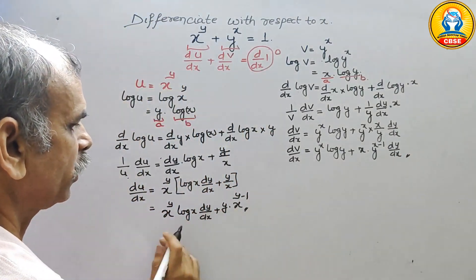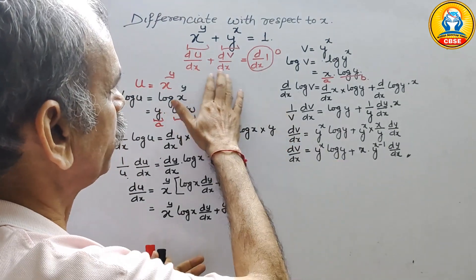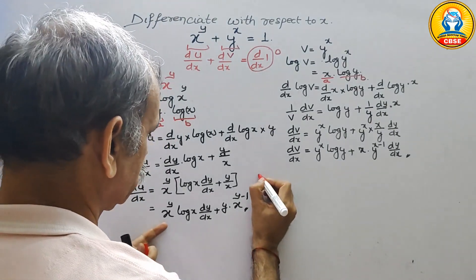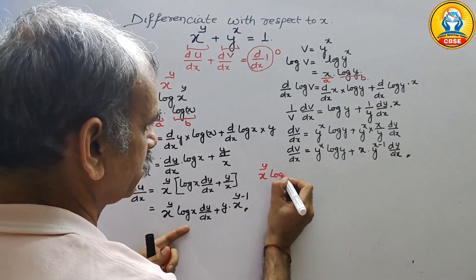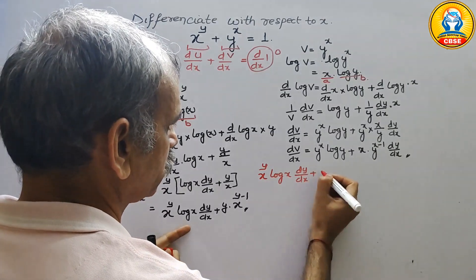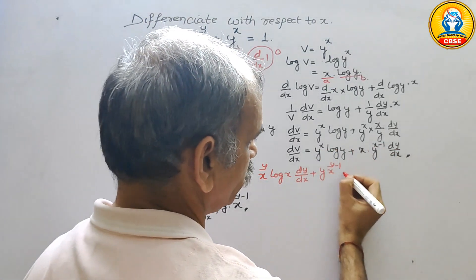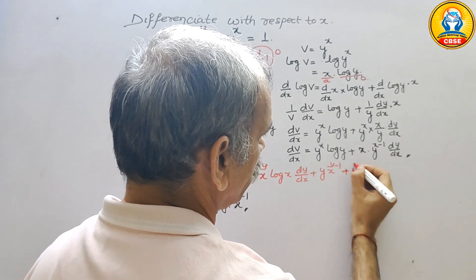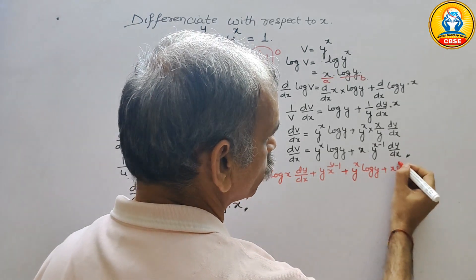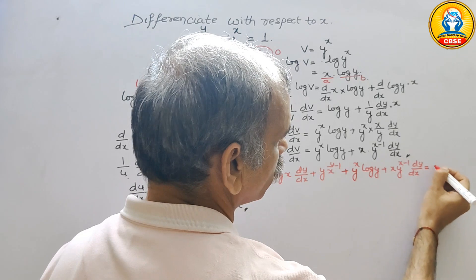Now we substitute both values into du/dx plus dv/dx equals 0. We get: x^y · log x · dy/dx plus y · x^(y-1), plus y^x · log y plus x · y^(x-1) · dy/dx, equals 0.